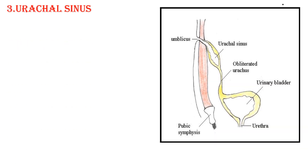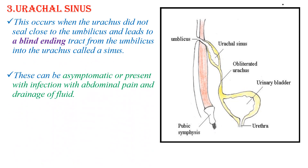The third one is urachal sinus. This occurs when the urachus did not seal close to the umbilicus and leads to a blind-ending tract from the umbilicus into the urachus, called the sinus. There is a connection with the umbilicus, but it is blind — there is no connection with the bladder. This can be asymptomatic or present with infection, abdominal pain, and drainage of blood.